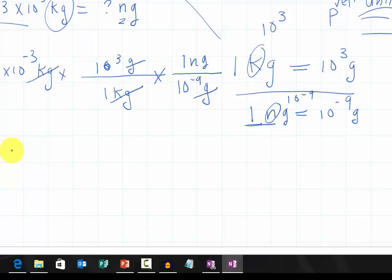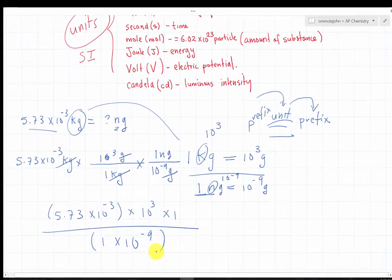Which is, just to be safe, use parentheses, 5.73 times 10 to the negative 3, parentheses, times 10 to the 3 times 1 from here. Then you divide everything by on the bottom, 1 times 10 to the negative 9. And that's all you have to do.